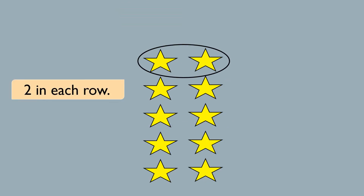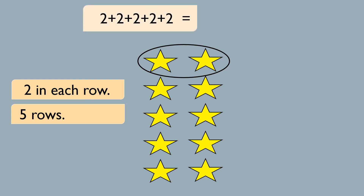Here I have arranged the same number of stars in a different way. There are 2 stars in each row and we have 5 rows, which means that we will be adding the number 2 five times. 2 plus 2 plus 2 plus 2 plus 2 equals 10.